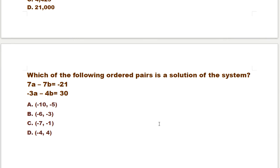This is question number five, the last one. Which of the following ordered pairs is a solution of the system? 7a - 7b = -21, -3a - 4b = 30.